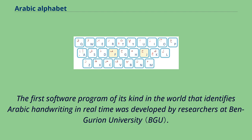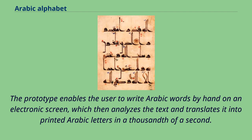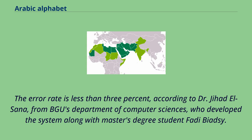The first software program of its kind in the world that identifies Arabic handwriting in real time was developed by researchers at Ben-Gurion University. The prototype enables the user to write Arabic words by hand on an electronic screen, which then analyzes the text and translates it into printed Arabic letters in a thousandth of a second. The error rate is less than 3%, according to Dr. Jihad El-Sanna from BGU's Department of Computer Sciences, who developed the system along with master's degree student Fadi Biazi.